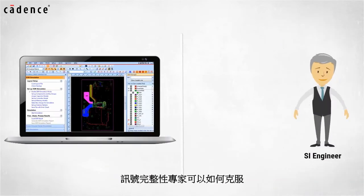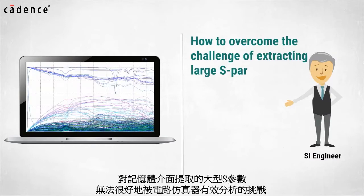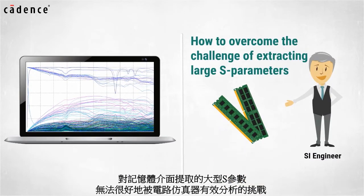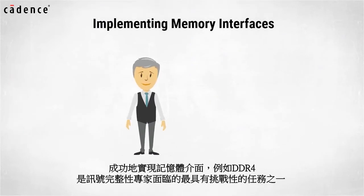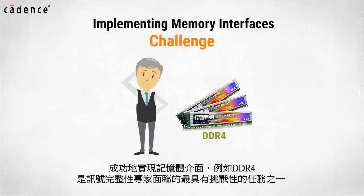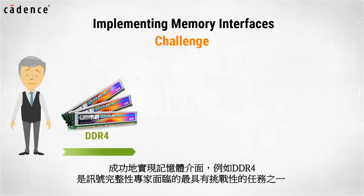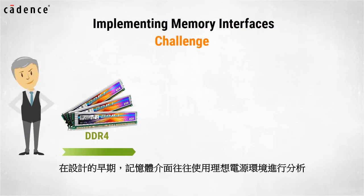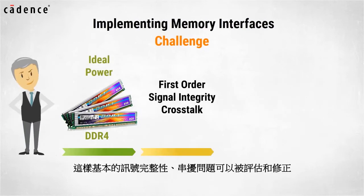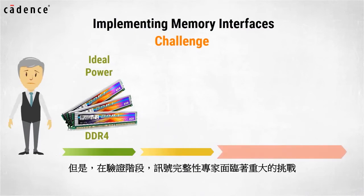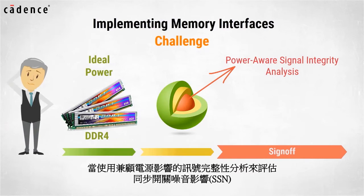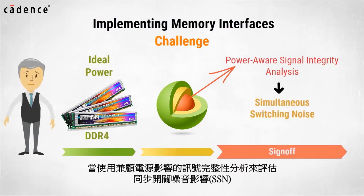Our video today will show you how signal integrity engineers can overcome the challenge of extracting large S parameters for their memory interfaces which may not simulate effectively in their circuit simulator. Successfully implementing memory interfaces such as DDR4 is one of the most challenging tasks faced by SI engineers. Early in the design process, memory interfaces are typically analyzed using ideal power so that first-order signal integrity and crosstalk problems can be assessed and corrected. However, significant challenges are faced by SI engineers during the sign-off stage when power aware signal integrity analysis is performed to assess the effect of simultaneous switching noise or SSN.